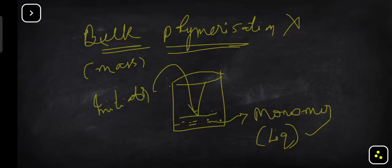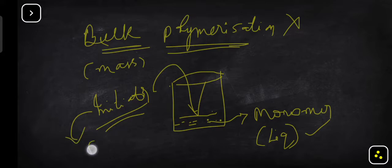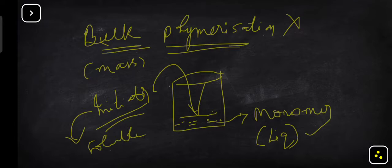To the beaker containing the monomer in liquid state, you will be adding the initiator. Remember, whatever initiator you add must be soluble in the monomer — it should be monomer-soluble. If the initiator is not soluble in the monomer, it is of no use. The initiator must be soluble in the monomer.